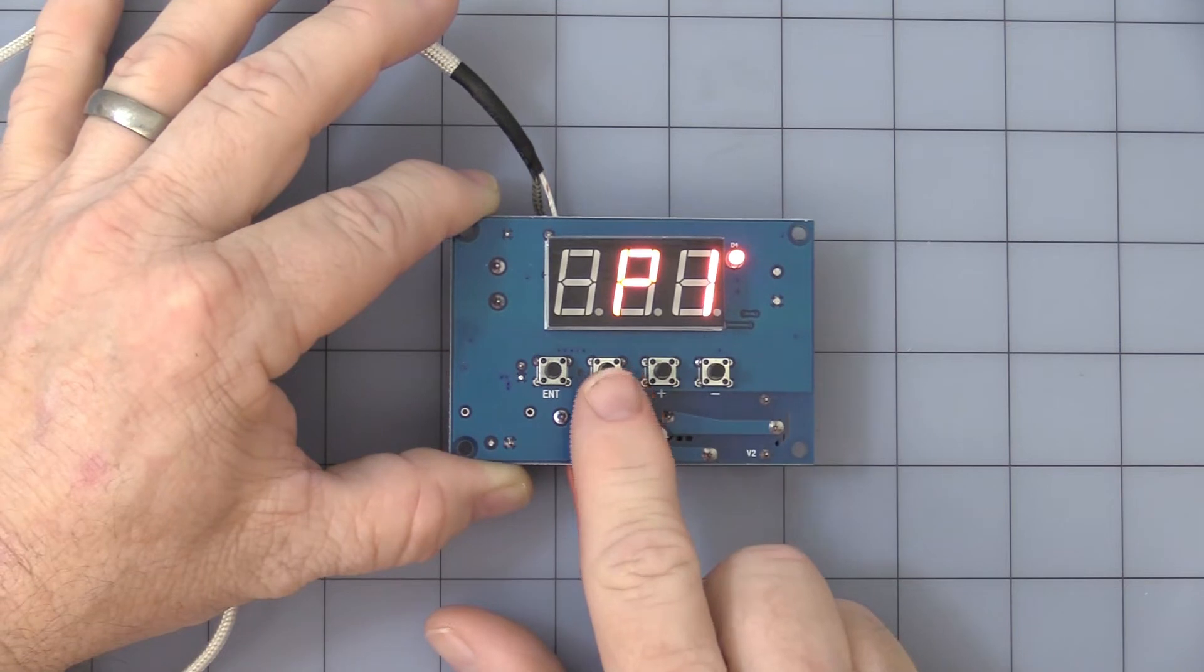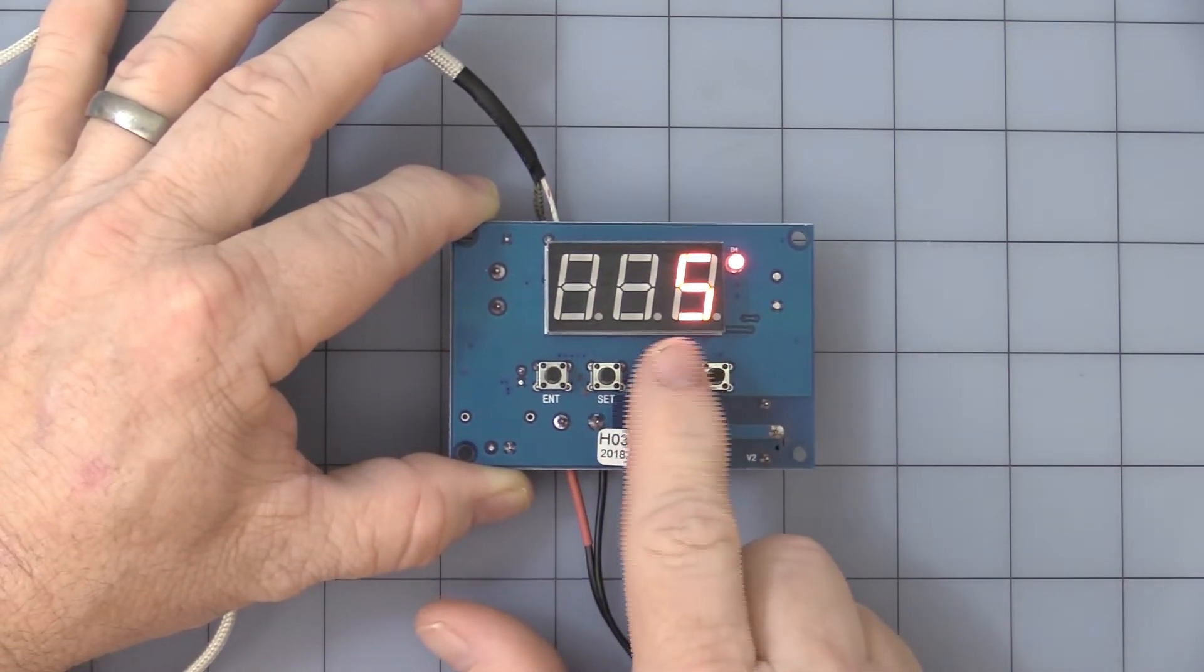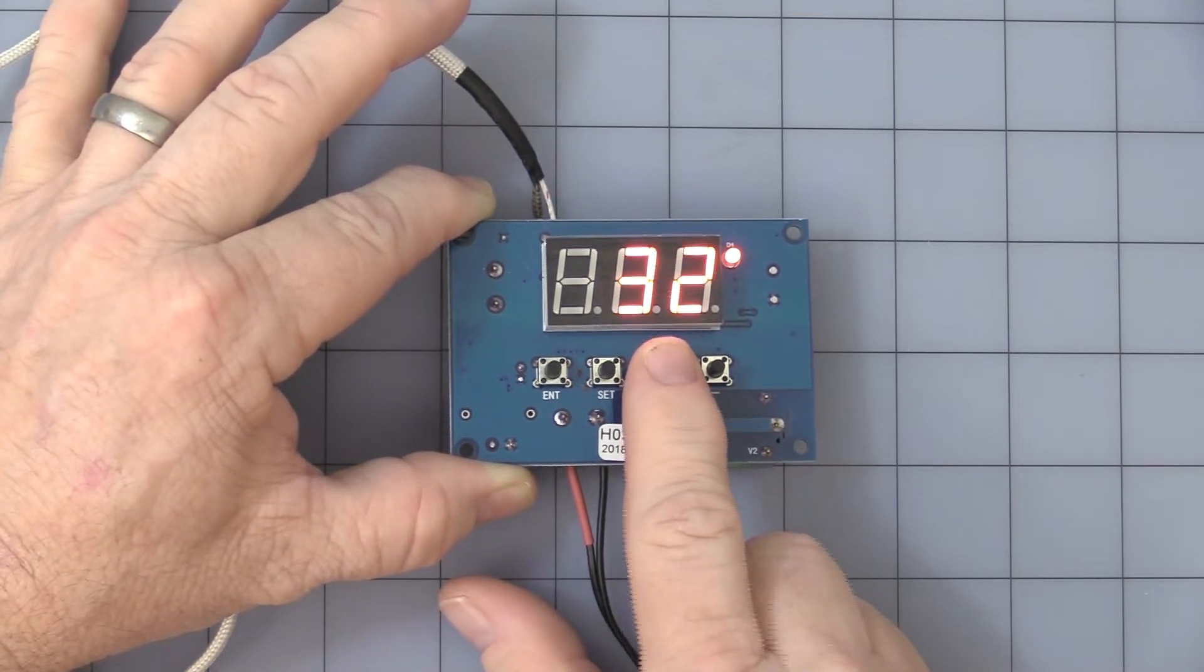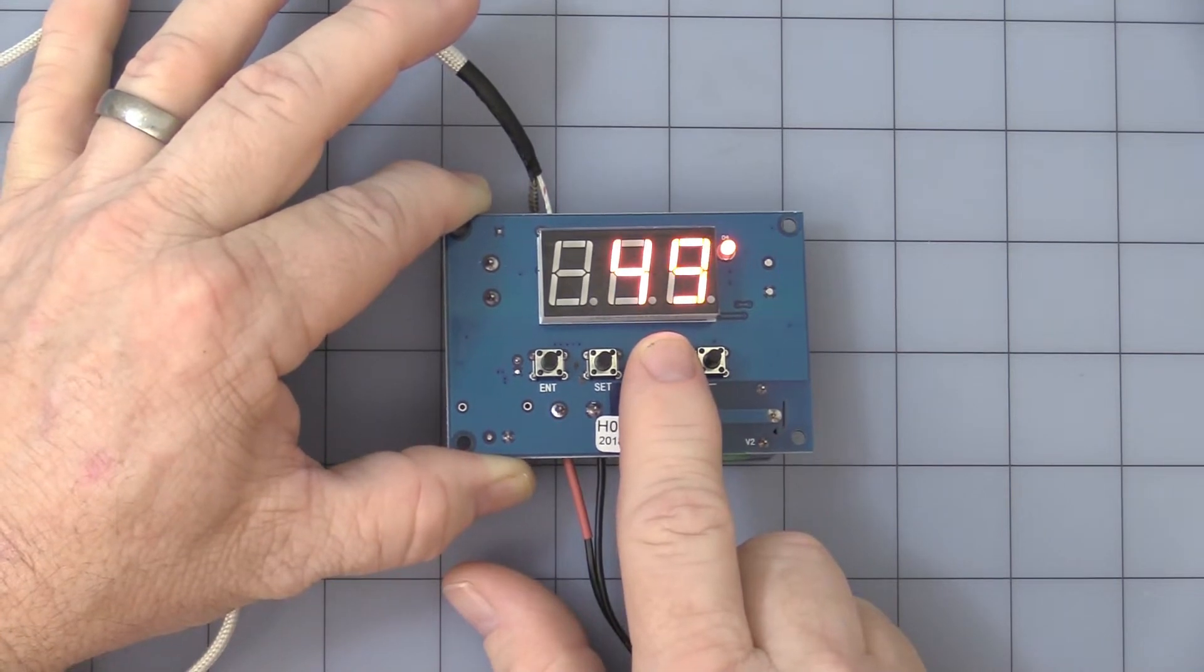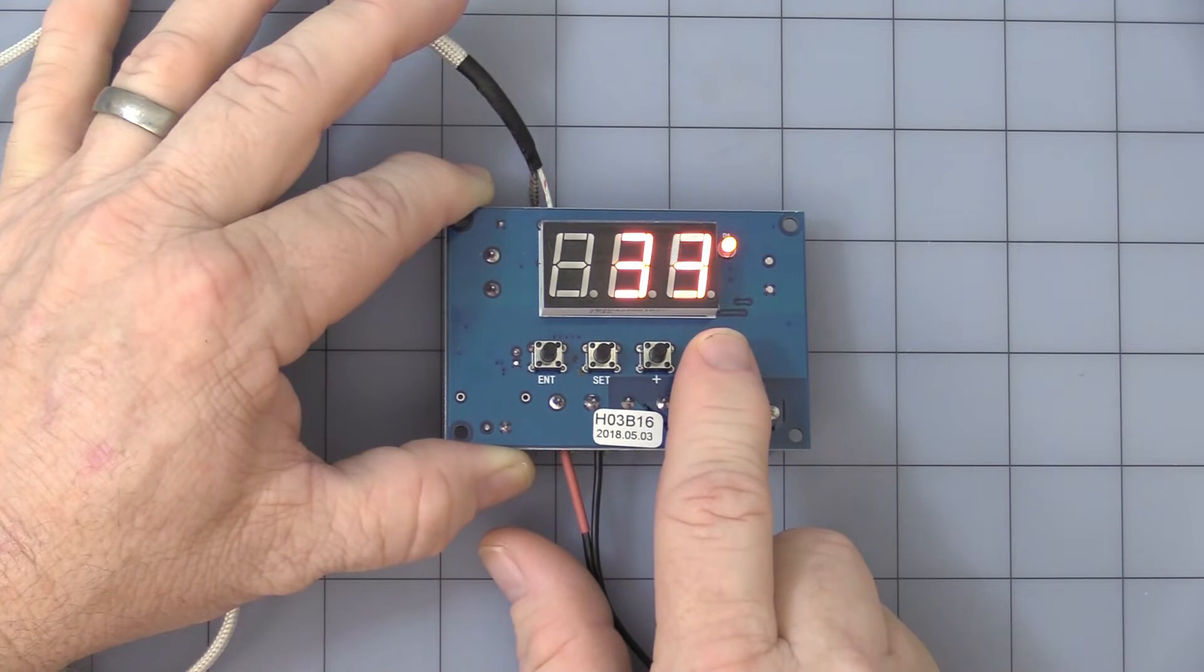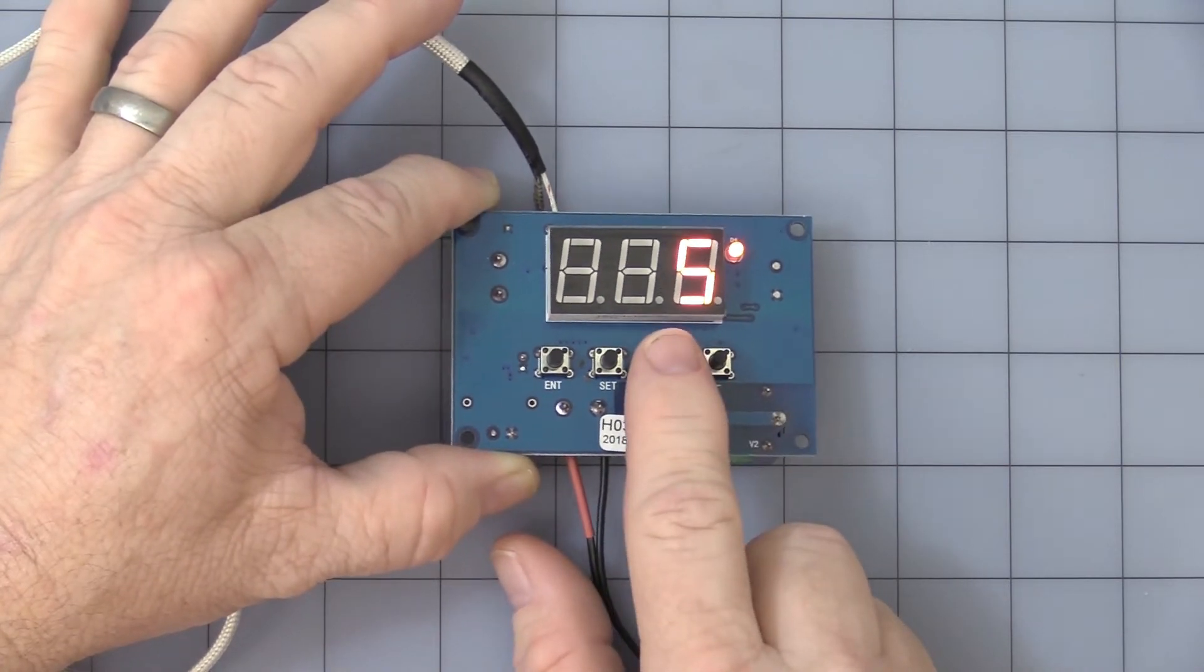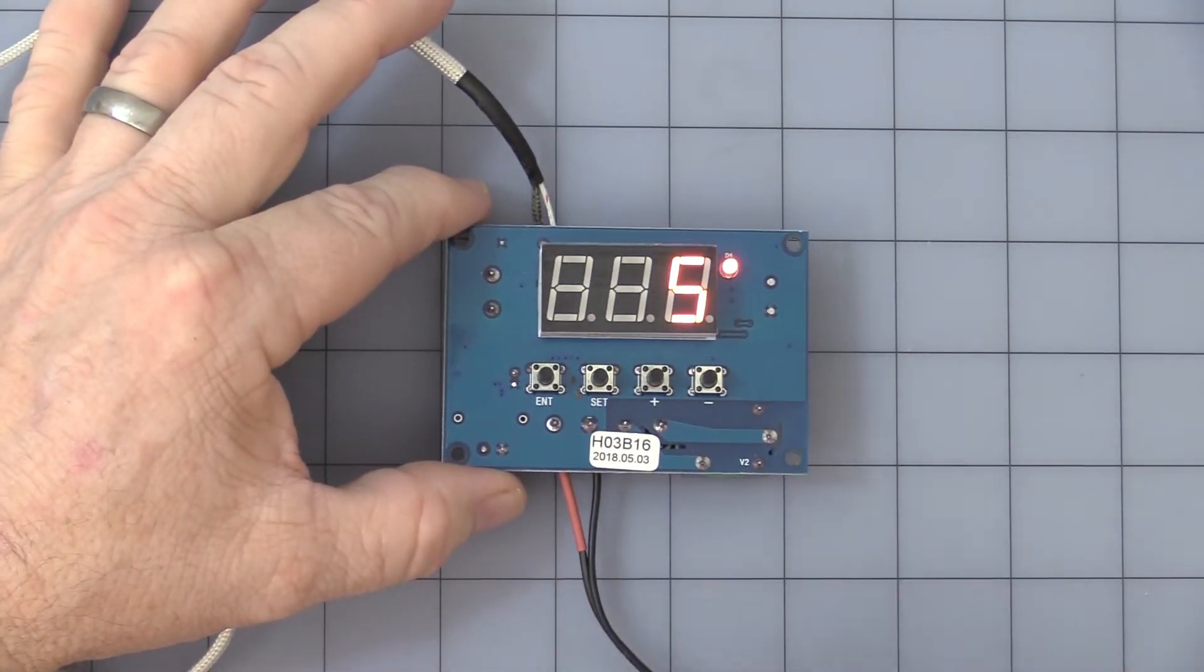P1 is the hysteresis setting. You hit set again, and it comes factory set at 5, but there again, you can see how high it'll go. This is the difference between how long the relay stays on and off. So you can have up to 50 degree C hysteresis setting. 5 seems to work well, so we'll stay with that.